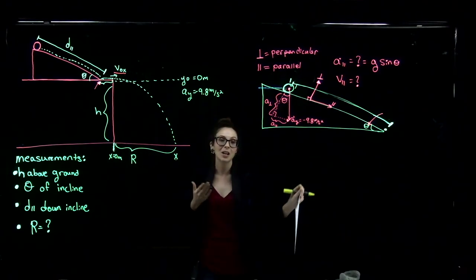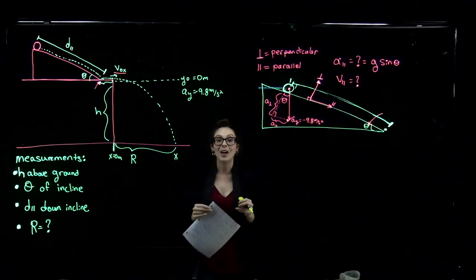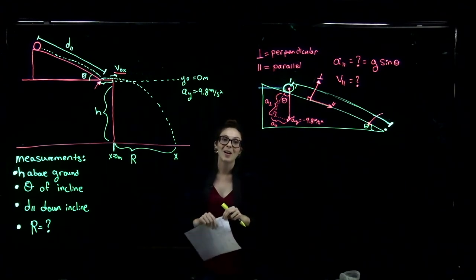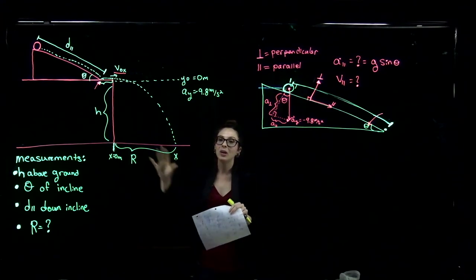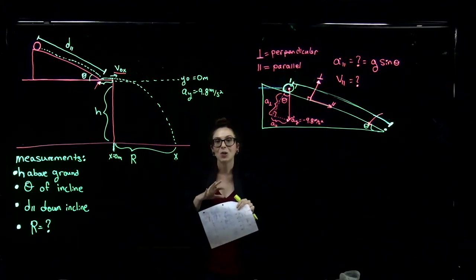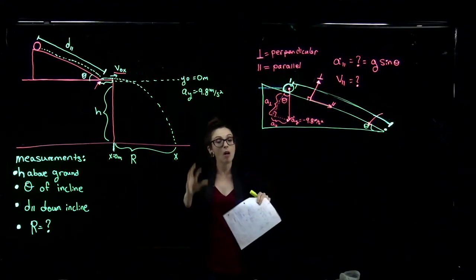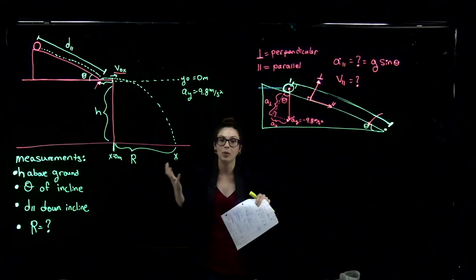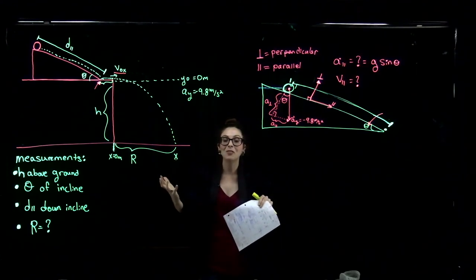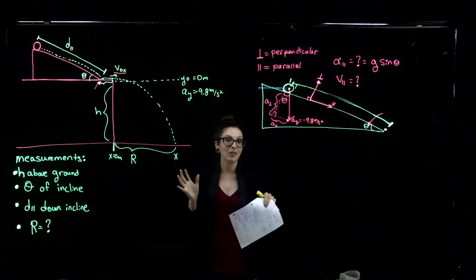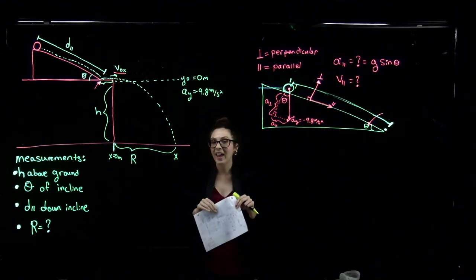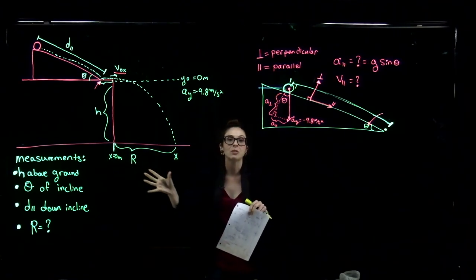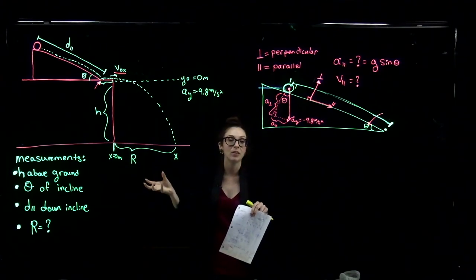Whenever you compare your calculations to the experiment you do, you might find a percent error of 50% or more. But that's okay because it's an experiment. Your job is to think about all of the things that could have possibly happened in your experiment that contributed to such a large percent error. If we had a perfect physics world, in a perfect vacuum with everything operating without friction, then we would match the quantity that we calculate here with your experiment.